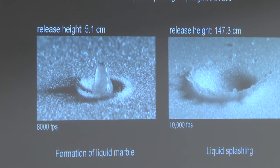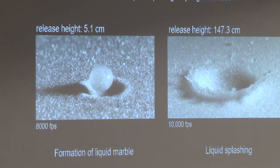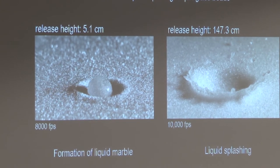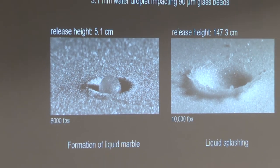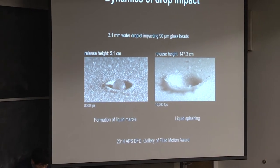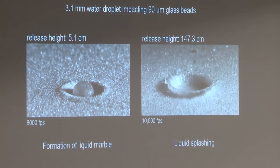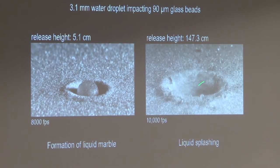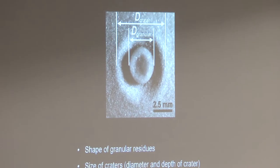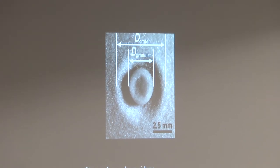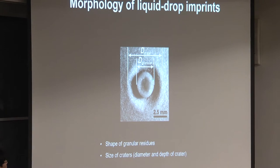The interesting thing is that the drop can bounce off, accumulate a layer of granular materials on the surface, and fall back on the bed. We call this shape a liquid marble, because you have a liquid drop coated with an armor of granular particles on the surface. In the second video, I release a drop from a higher height — about 1.5 meters — and you see typical splashing patterns, with a pancake at the center of the crater. Now let's look at the shape we get at the end of impact: you get a crater and some granular residue at the center.